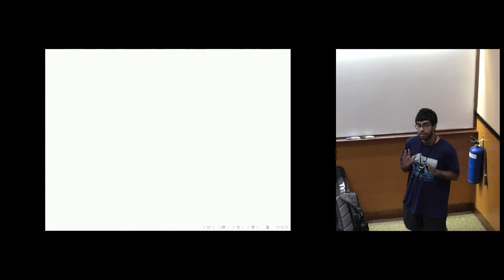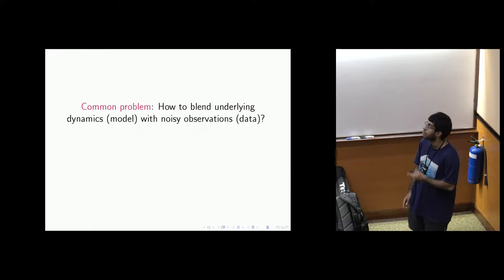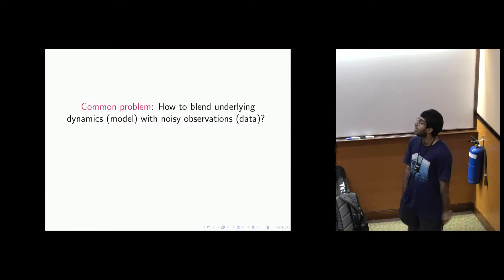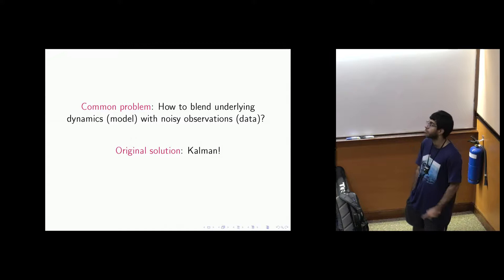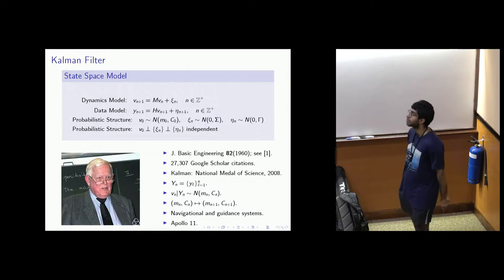My work has been at the interface between mathematical statistics and applied mathematics. One of the most important questions you can ask in these two fields is: how can we blend underlying dynamics — a model — with noisy observations and data? This question has been considered for a very long time, and probably the first systematic way it was addressed in a methodical paper dates back to the original ideas given by Rudolf Kalman in 1960.